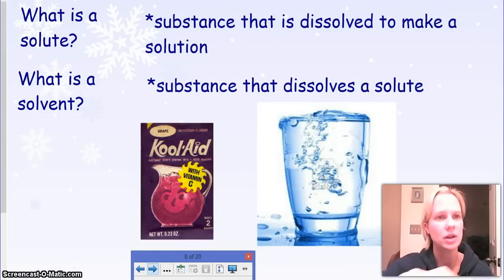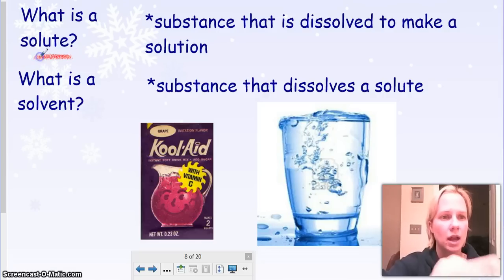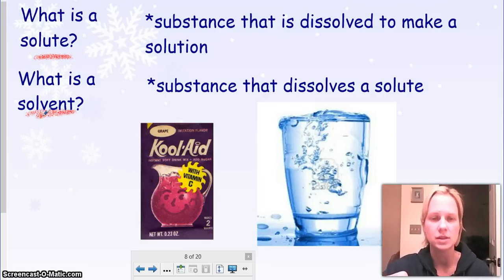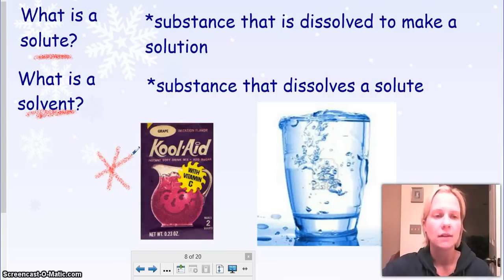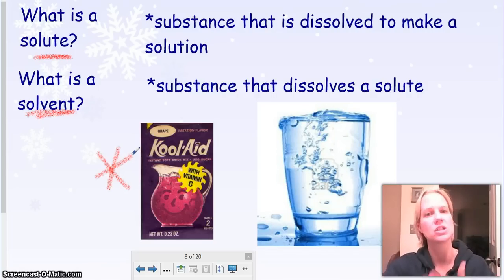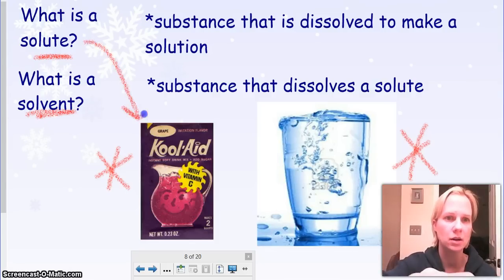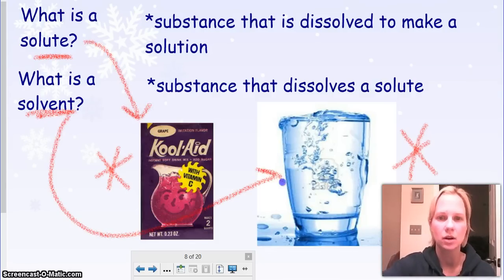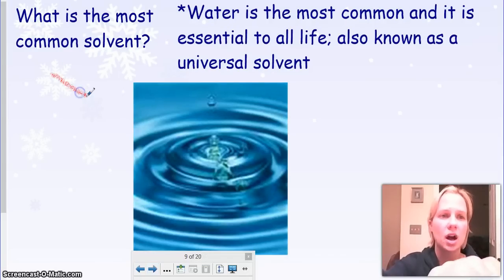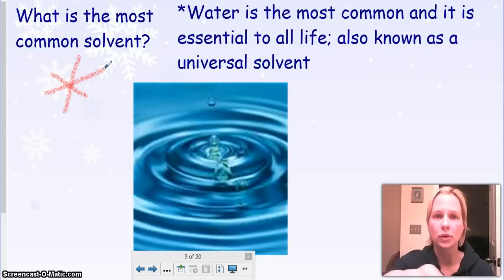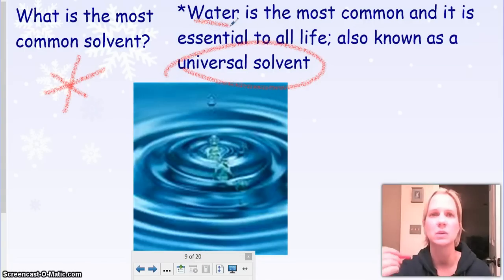A solution is made up of two parts: the solute and the solvent. The solute is the thing that is dissolved to make a solution. So in our example, the Kool-Aid packet itself is the solute. The solvent is the substance that the solute gets dissolved in, and in our case, it would be water. So this is the solute right here and this is the solvent.